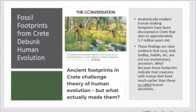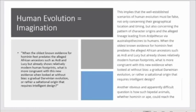These findings are clear evidence that Lucy, Ardipithecus, Australopithecus, Australopithecus sediba, Homo habilis, etc., they're not our evolutionary ancestors. The reason is because these footprints indicate that creatures with human feet lived much earlier than these so-called human ancestors. Genetics, genes, traits—these are what are inherited through sperm and egg, not a rock, not geology, not geography, but genetics.